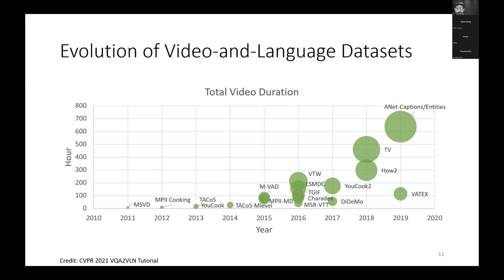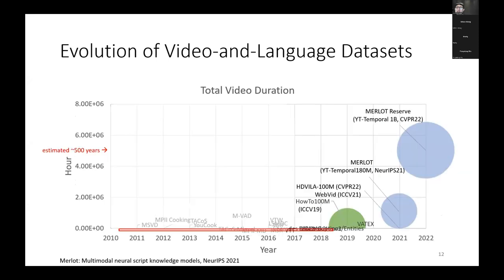These datasets include different downstream tasks such as video captioning, question answering, and video-text retrieval. After that, some researchers proposed to collect very large-scale datasets for pre-training — that is, to pre-train the model on a large dataset, and then fine-tune to downstream datasets.